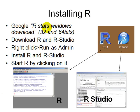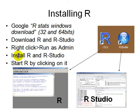For installing R, you can just Google for it and download the 32- or 64-bit R for Windows, Mac, or Linux as appropriate. Always install as admin because we can't really deal with permission problems. Install both R and RStudio — RStudio is just a GUI for controlling the R package nicely.